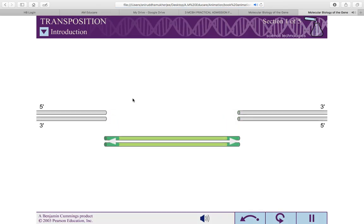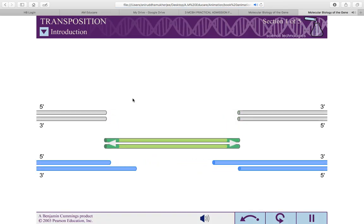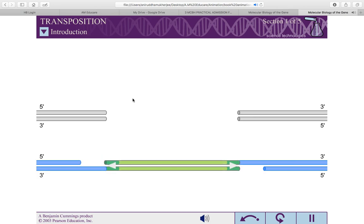Transposition is a form of genetic recombination that moves defined genetic elements, called transposable elements or transposons, from one DNA site to another.